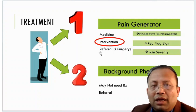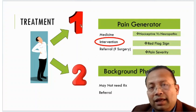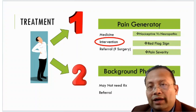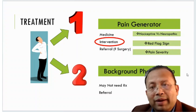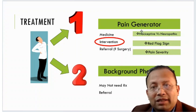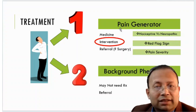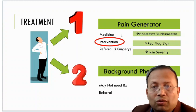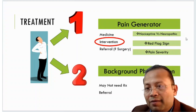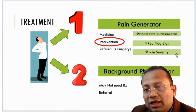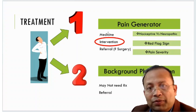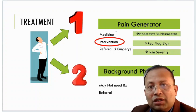Treatment is also organized under two headings: pain generator treatment and background phenomena treatment. For pain generator treatment, we have three options: medicine, intervention, and if required, surgical referral. These three options help us decide which specific treatment is suitable for a particular patient.